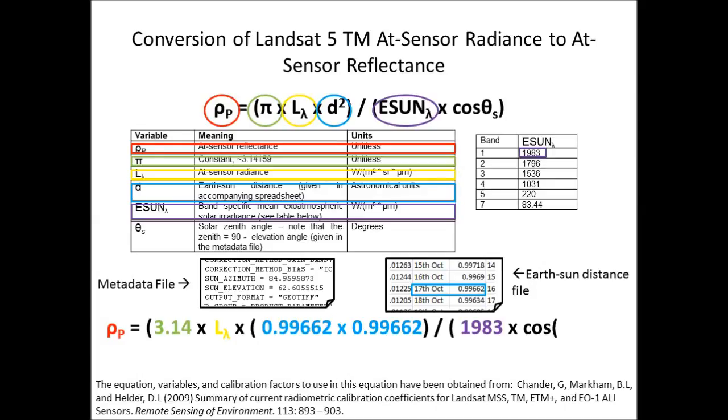We're then dividing by this value of ESUN, which is the mean exoatmospheric solar irradiance integrated over those wavelengths for that particular band. For band 1, for example, we have a value of 1983, which I've placed in the equation at the bottom.